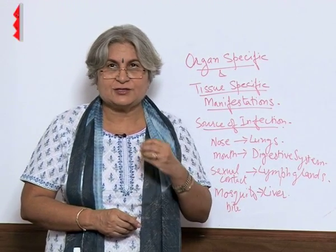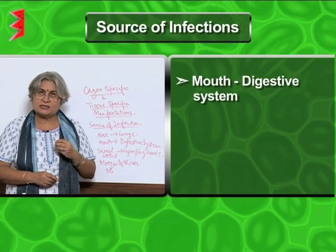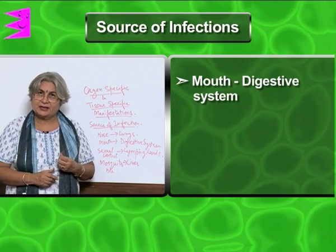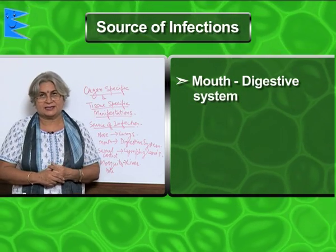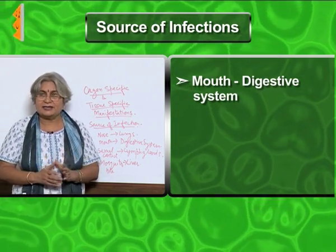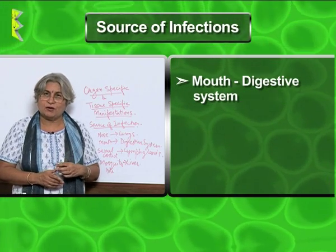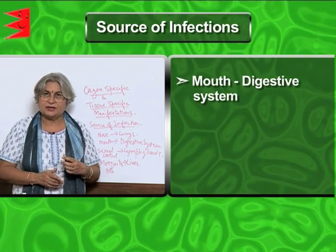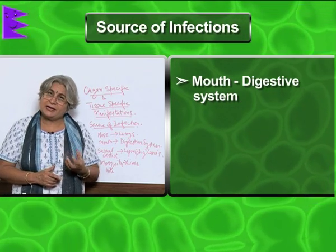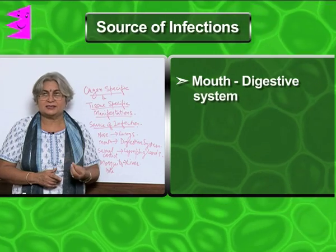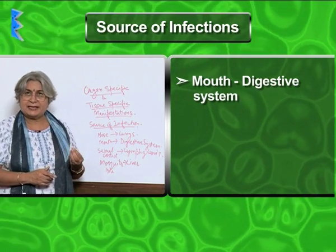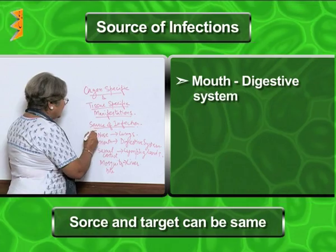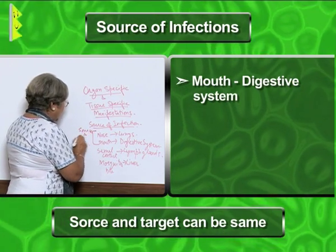When we eat food, the source is obviously the mouth, which leads to the digestive system, so the effect will also be on the digestive system. For example, with waterborne diseases, if we have consumed adulterated water and a virus enters through water, it will affect the liver — causing jaundice. If we have taken in bacteria for cholera, it will disturb our digestive system. So sometimes the source and the target are the same.